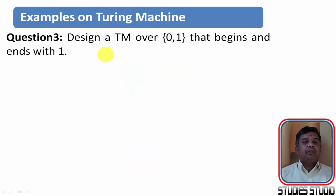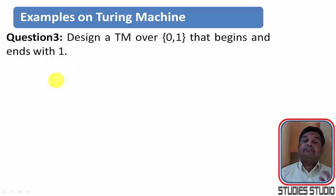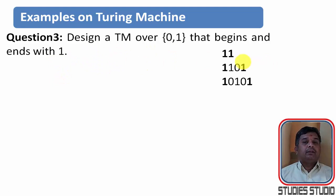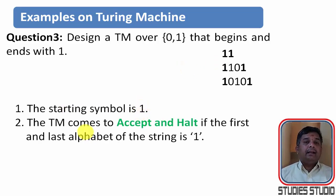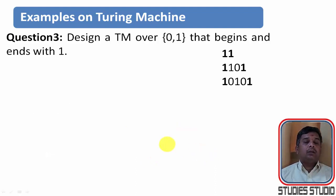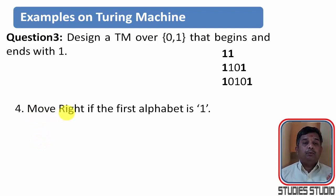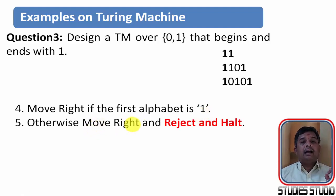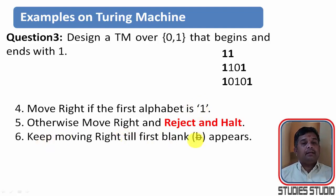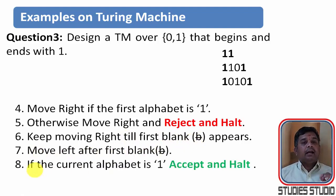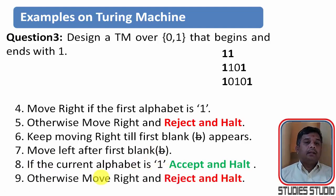Now let us take one more example: design a Turing Machine over 0 and 1 that begins and ends with 1. If you have understood the first two examples, this will be easy. The first example shows how to start with 1; the second shows how to end with 1. Now it is a combination of both. The first symbol and the last symbol are supposed to be 1, so the string length is supposed to be at least 2. The Turing Machine comes to accept and halt state if the first and last symbols are 1; otherwise it comes to reject and halt. I will move towards the right if the first alphabet is 1; otherwise I move right and go to reject and halt. I keep on moving till the first blank appears, then move towards the left. If the current symbol is 1, I will accept and halt; otherwise I will reject and halt.